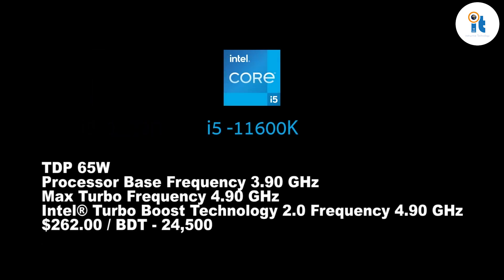Intel Core i5-11600K processor: TDP 95 watt, processor base frequency 3.90 GHz, max turbo frequency 4.90 GHz, Intel Turbo Boost Technology 2.0 frequency 4.90 GHz. Price: approximately $292.